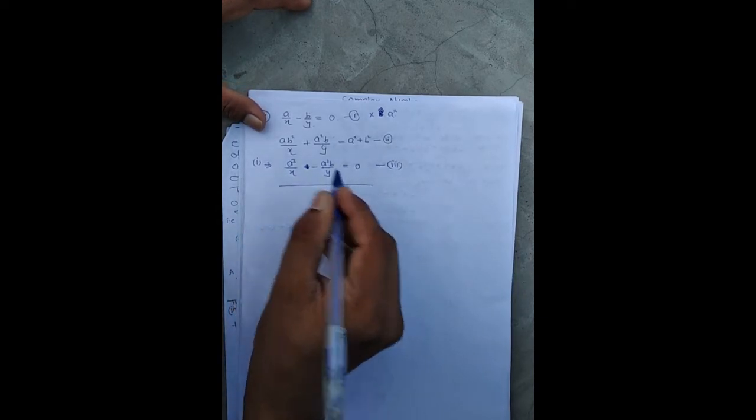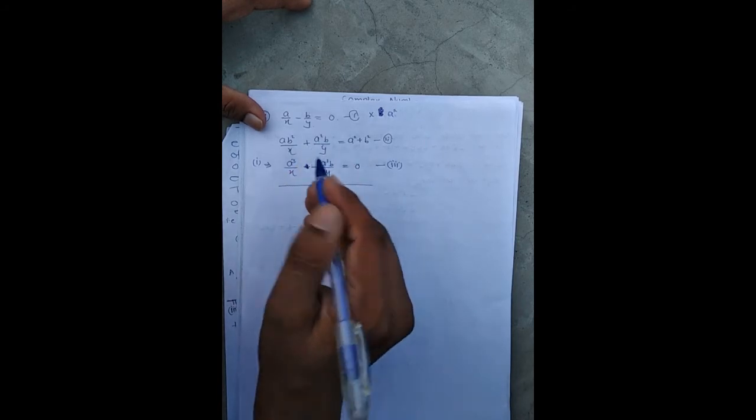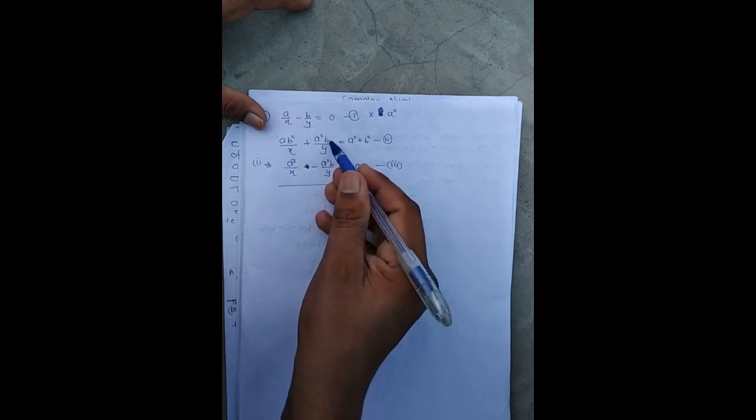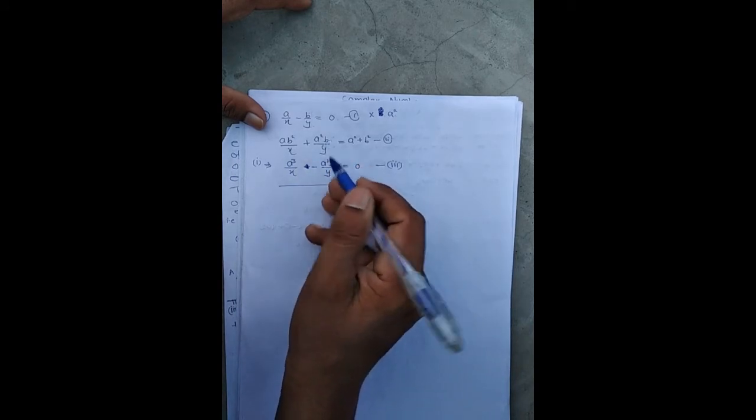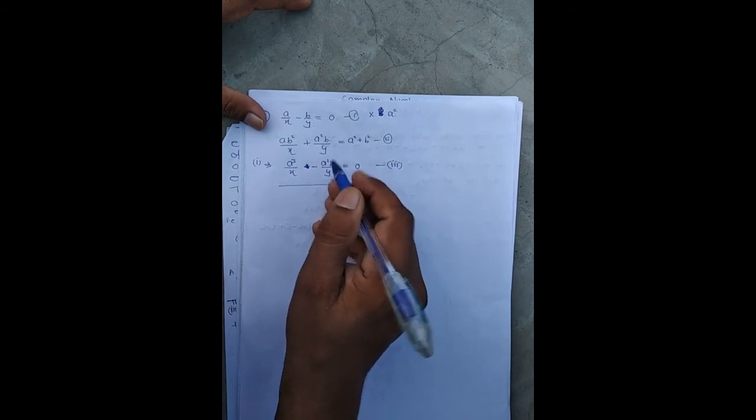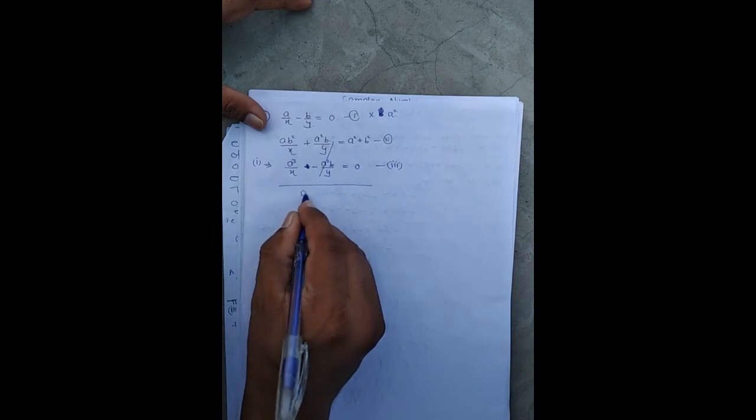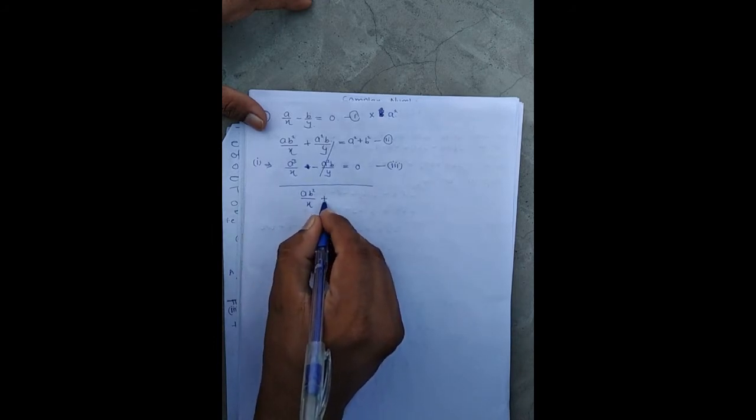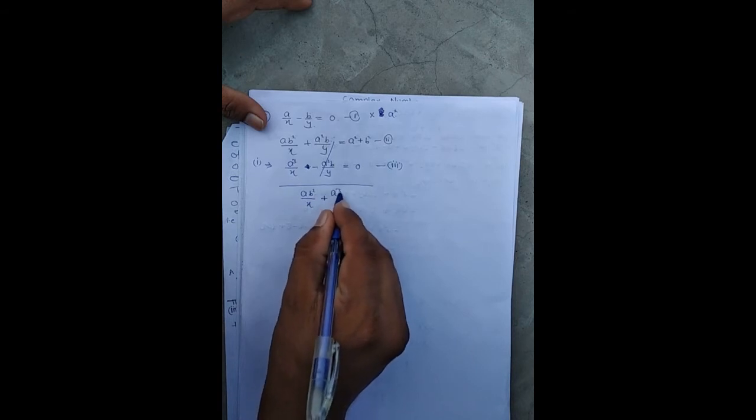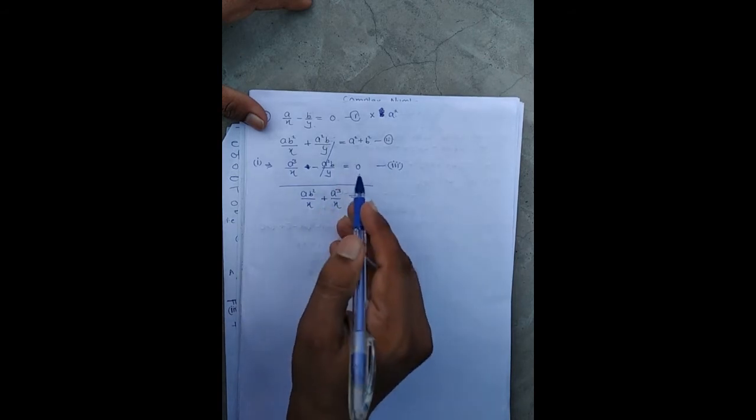Since the coefficient of 1/y are of equal opposite sign, then we add these equations. These two terms cancel out: a²b/y positive and a²b/y negative cancel. And ab²/x on adding plus a³/x equals a² + b² plus 0.